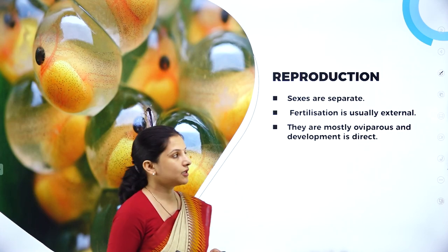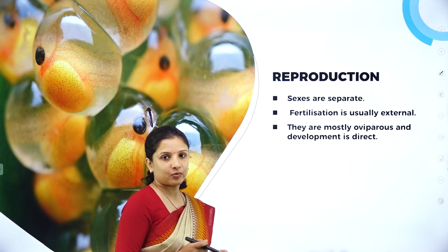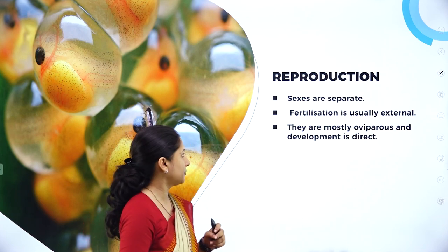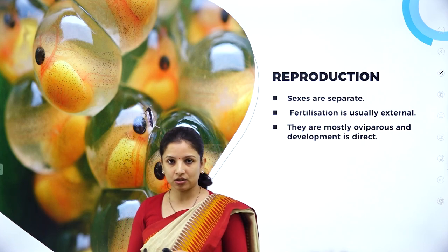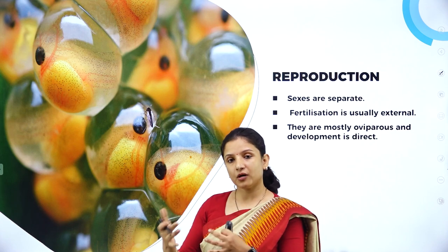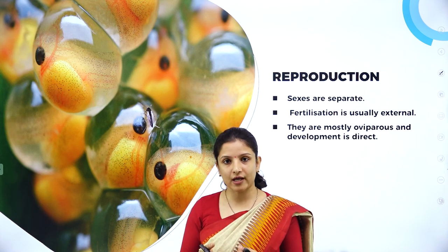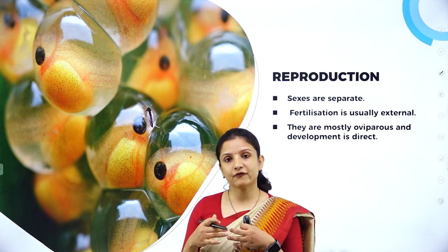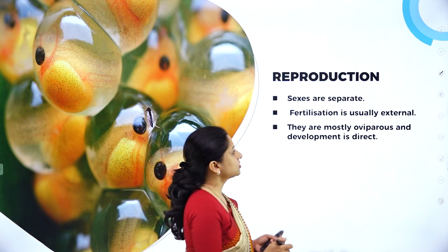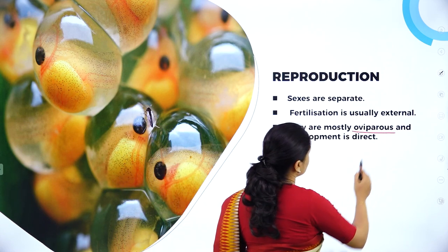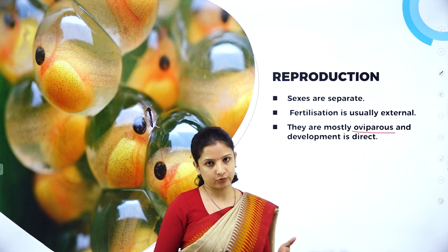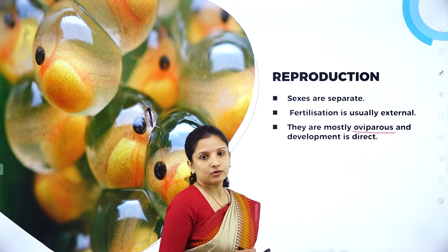Regarding reproduction: the sexes are separate, that is they are dioecious, with male and female fishes being distinct. Fertilization is usually external — they lay eggs and the sperm fertilizes the egg outside the body in the water. They are mostly oviparous, that is egg-laying, and development is direct without any larval stage in between.